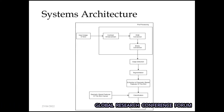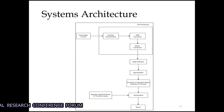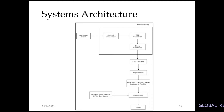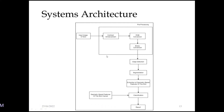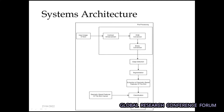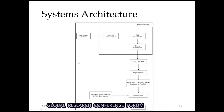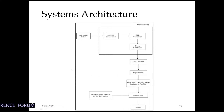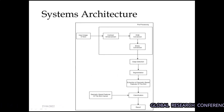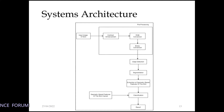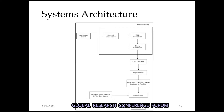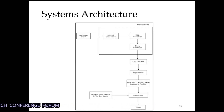This is the system architecture. First, it takes the input image of the skin. It is then pushed to the preprocessing part where it undergoes RGB conversion, then binary conversion, then age detection, then segmentation. Next is the feature extraction part, where it extracts all geometric-based features of the skin. Finally, it classifies using the CNN model and gives the result.